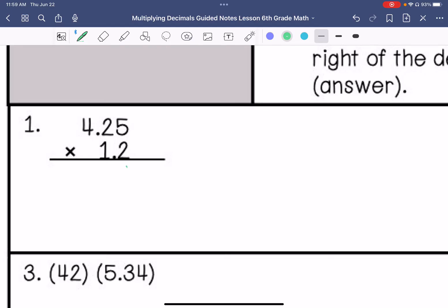Alright, 2 times 5 is 10. 2 times 2, 4 plus 1 is 5. 2 times 4 is 8. We are going to cross that out like we did with a normal standard algorithm multiplication. Add that placeholder. 1 times 5 is 5. 1 times 2 is 2. And 1 times 4 is 4. So then we will add these together. Alright, and then I count 1, 2, 3. So 1, 2, 3. So this would be 5.1.